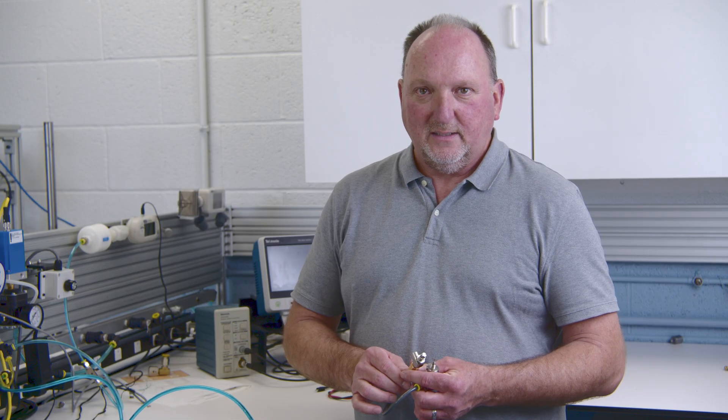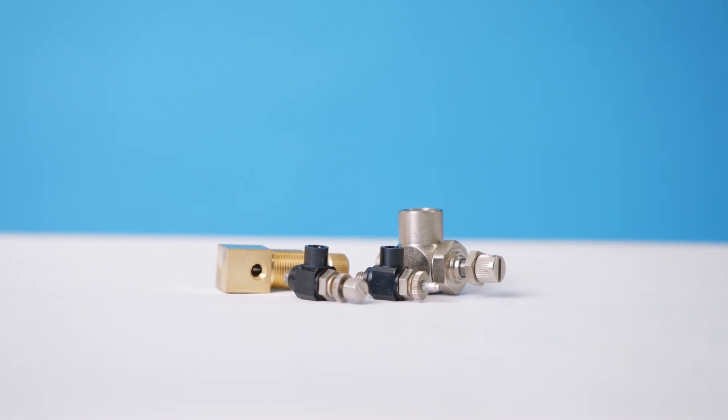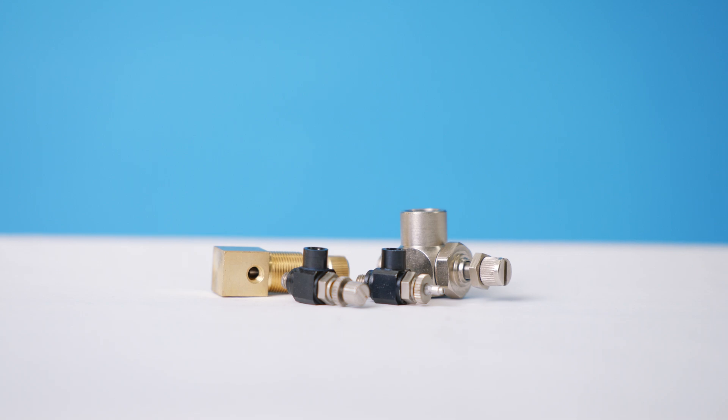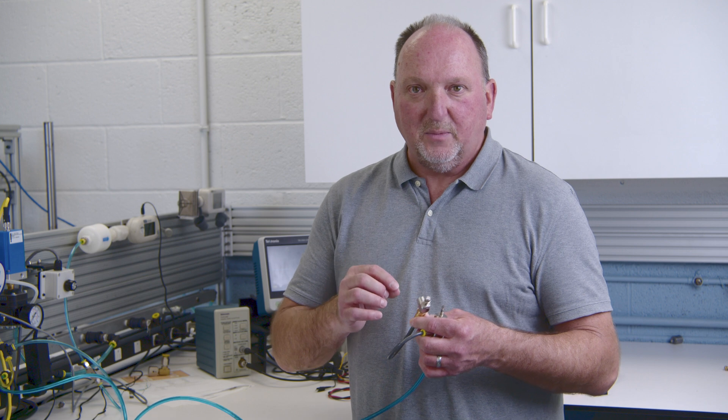If your system's flow and pressure are pretty consistent, you can also put a needle valve, a flow restrictor, any kind of reduction in flow downstream of the check valve to reduce the amount, the speed at which the poppet assembly is oscillating.